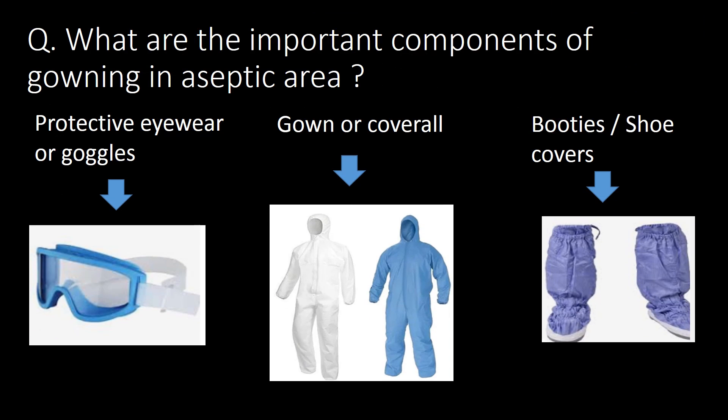The other three important components of gowning in aseptic areas are: fifth, protective eyewear or goggles; sixth, gown or coverall; and seventh, booties or shoe covers.